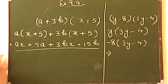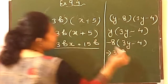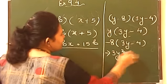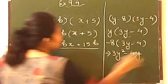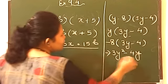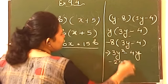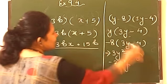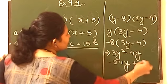y with 3y which will give you 3y square. y with 4 which will give you minus 4y. 8 with 3y which will give you minus 24y.